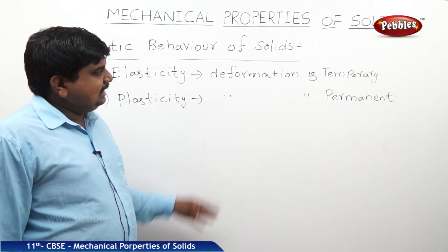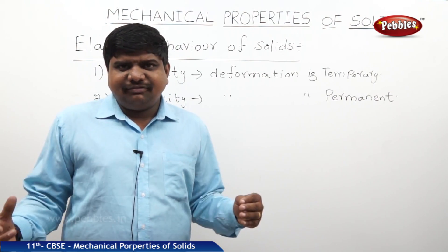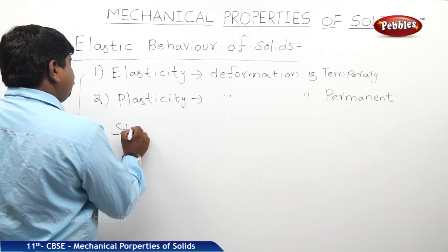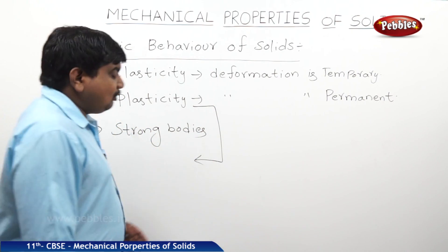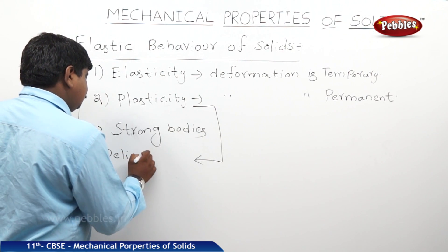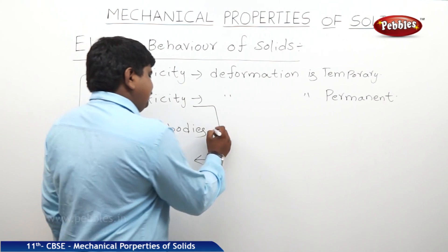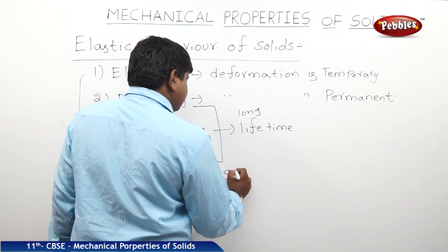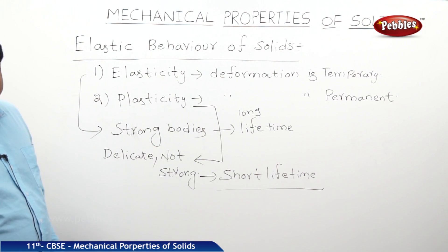The bodies which regain their original state in the absence of external force are generally strong materials with long life and many uses. Elastic bodies are mostly strong, except sponge-type materials. In the case of plasticity, the materials are not as strong — they are thin and delicate, useful only for a short interval of time. Strong elastic bodies have a long lifetime, while these delicate plastic bodies have a short lifetime. These are the main differences between elastic bodies and plastic bodies.